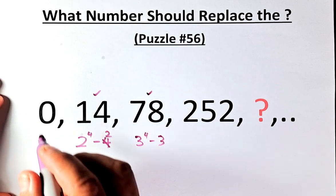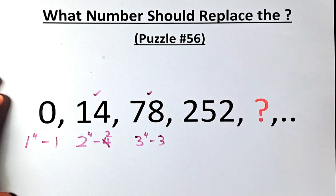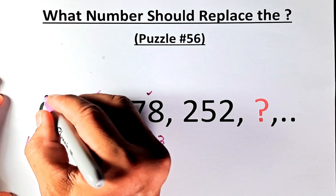So we are going back to 0. 0 is 1 to the power of 4 minus 1. 1 power 4 is 1, 1 minus 1 is going to be 0.